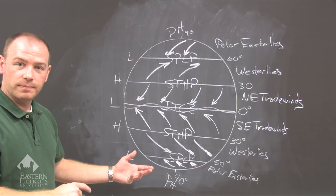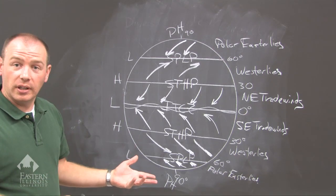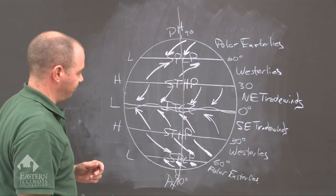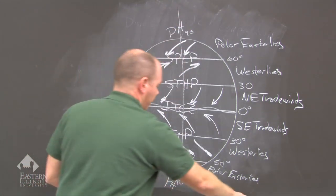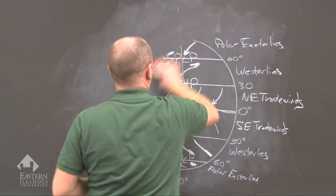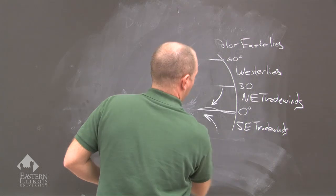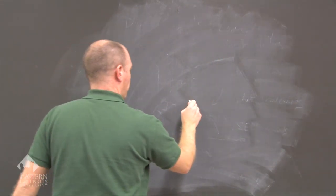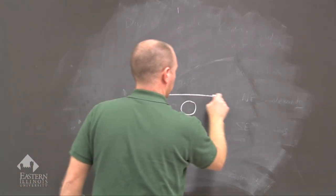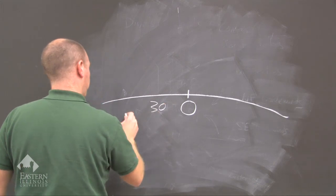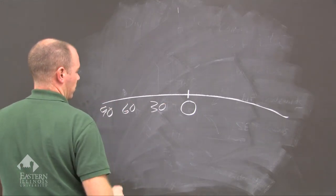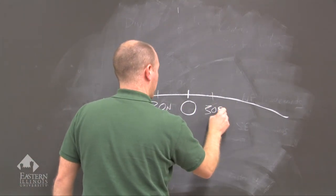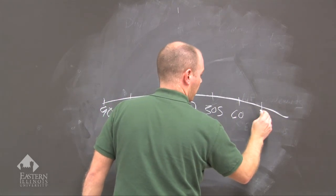So those are the wind belts and pressure belts — that is global circulation. Now we're going to look at it a different way: a cross section, taking a slice to see what is happening at the surface and aloft. We start with 0, 30 degrees north, 60 degrees, and 90 degrees, plus 30 south, 60 south, and 90 south.